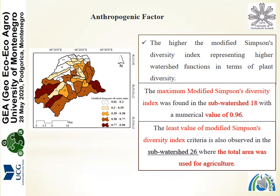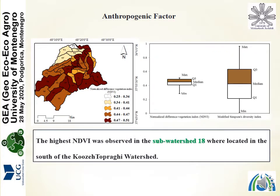Regarding the anthropogenic factor, the higher the modified Simpson diversity index, the higher the watershed function in terms of ground cover diversity. The maximum modified Simpson diversity index was found in sub-watershed 18 with a value of 0.96. The minimum was observed in sub-watershed 26, where the total area was used for agriculture. The highest NDVI was also observed in sub-watershed 18, located in the south of the Pusatoprogli watershed.